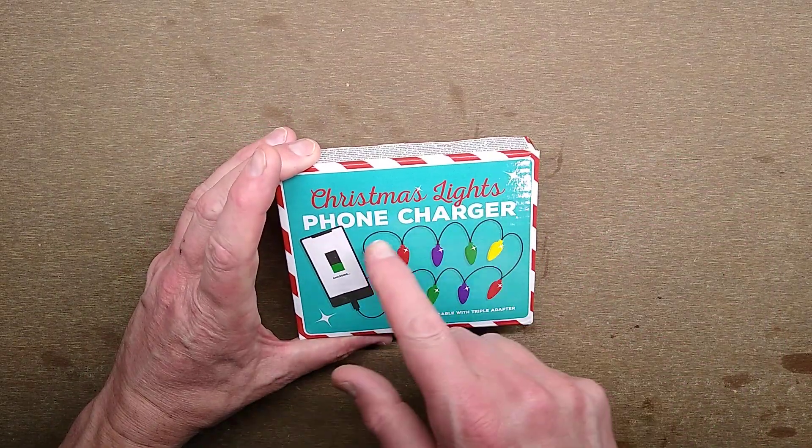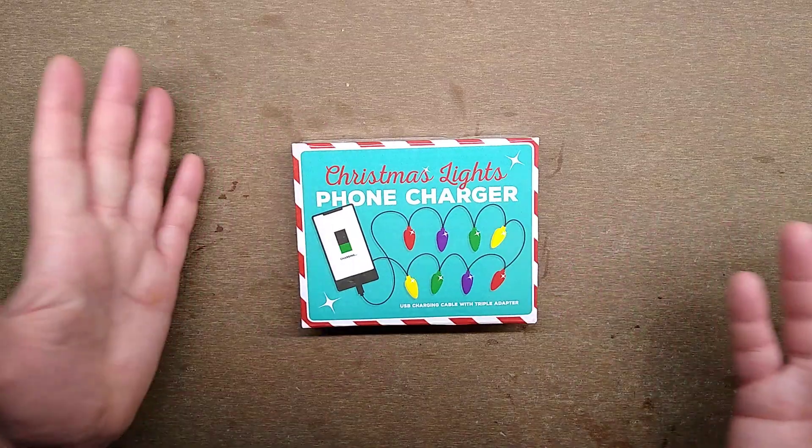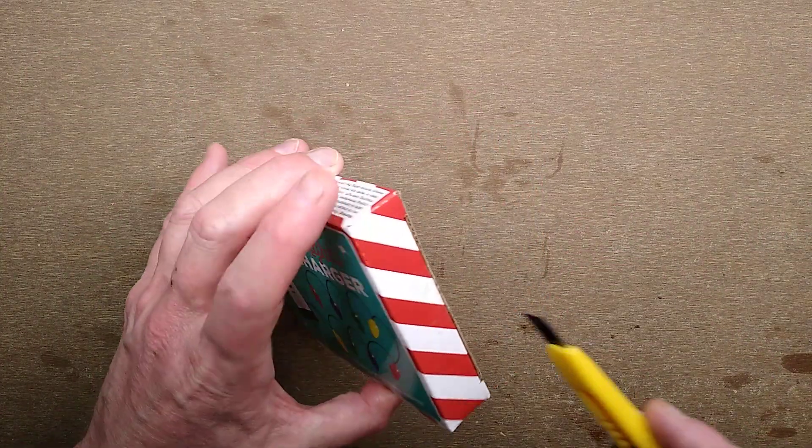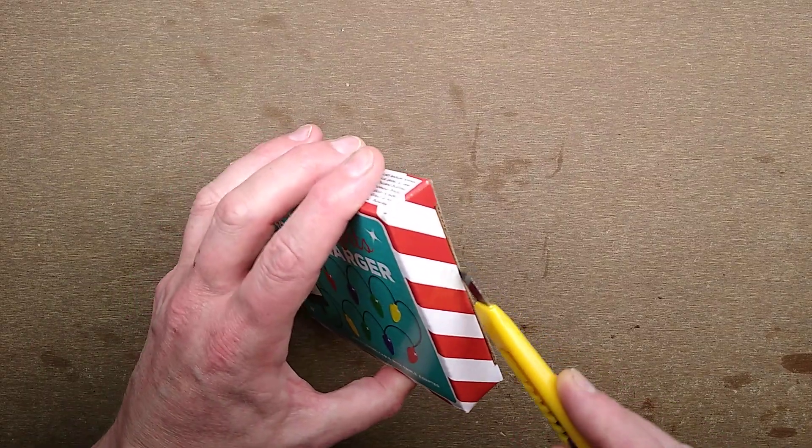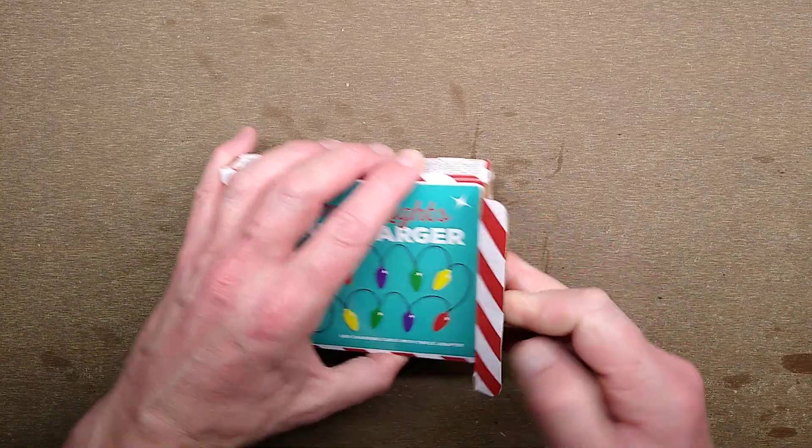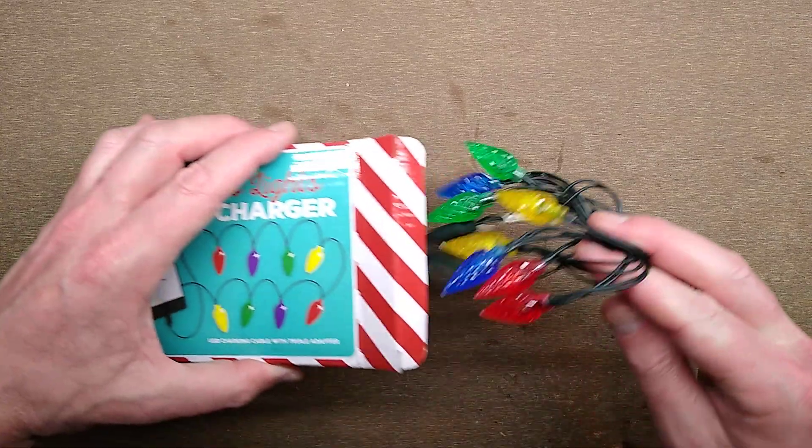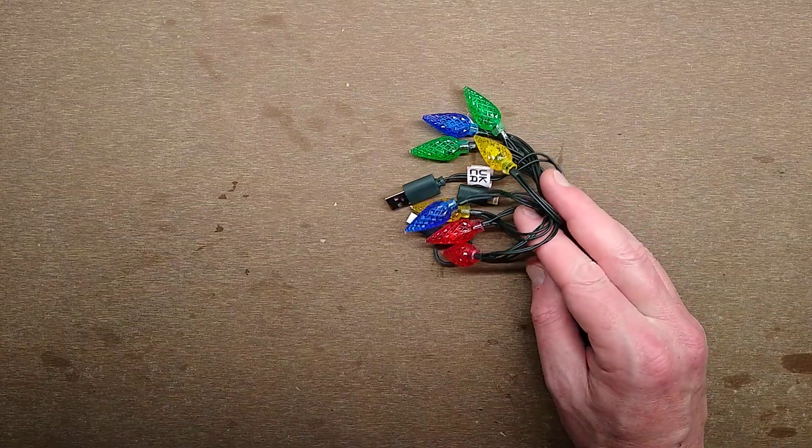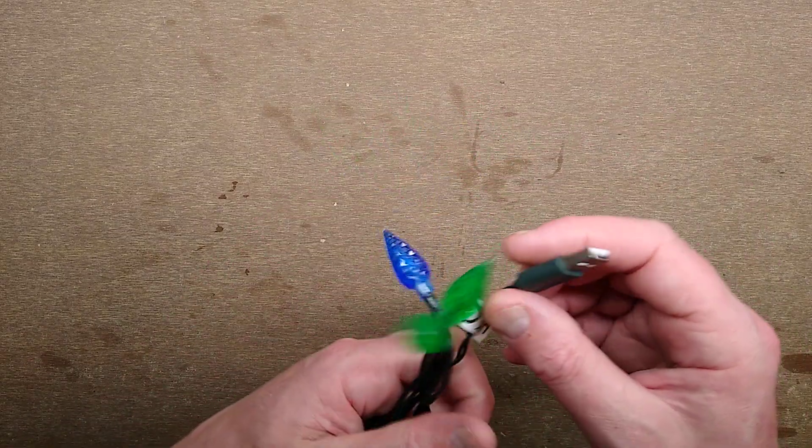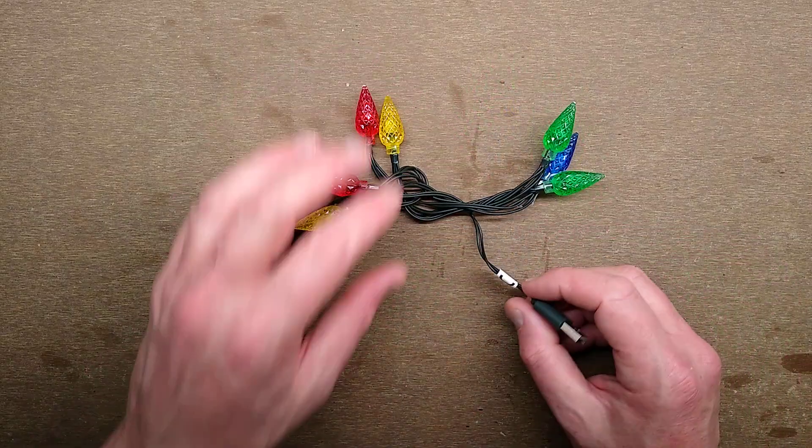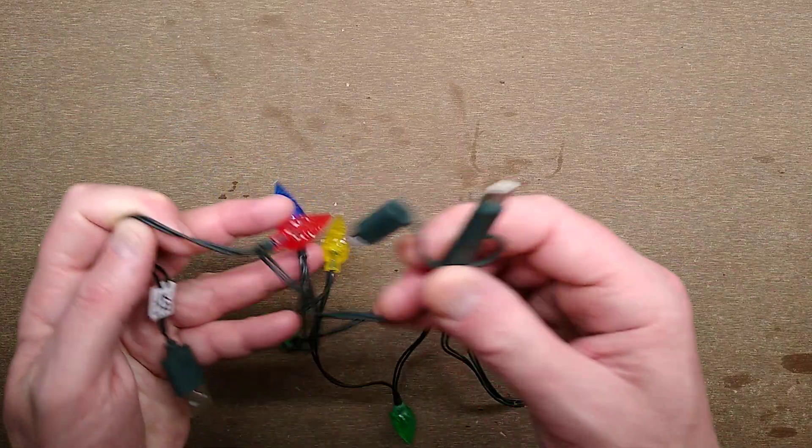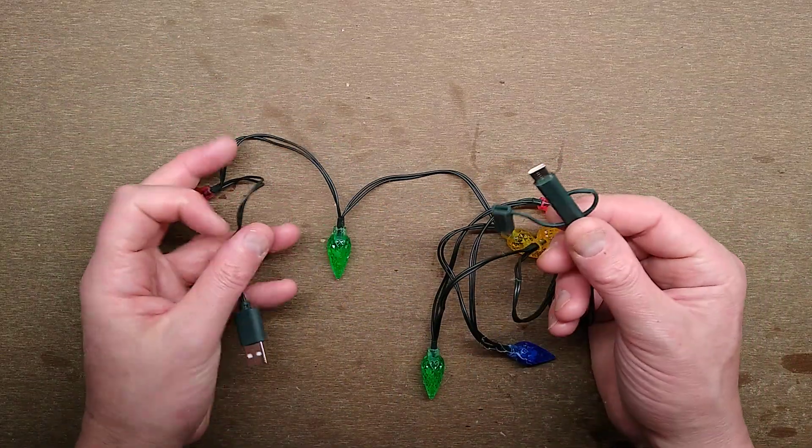This is a set of Christmas lights phone charger, USB charging cable triple adapter. This came from what used to be Pound World. It's not Pound World anymore, it's called One Below because Pound World went bust. They were the main arch nemesis of Poundland. The stuff they sell is not generally up to standard, but they have improved greatly since they went bust and restarted. So this is a set of Christmas lights that is also a USB charger for your phone.